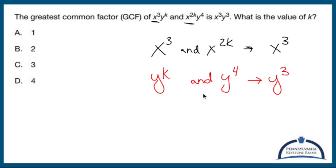If k was two, then the greatest common factor would be y². If it was just y, then it would be y¹. So k's got to be three.